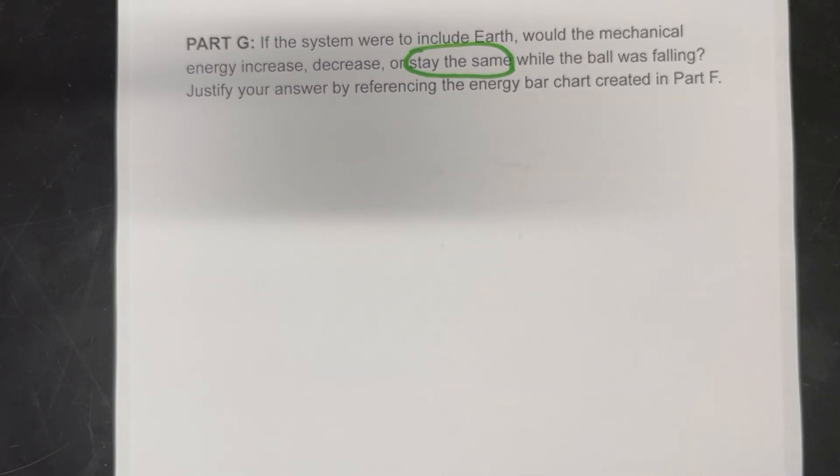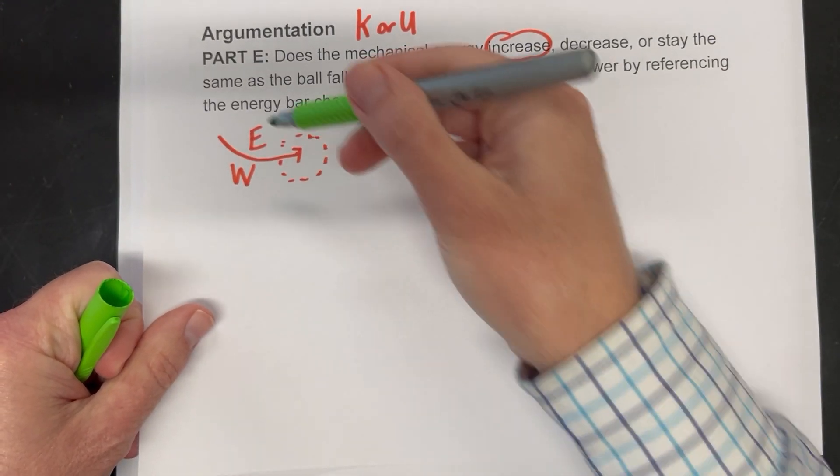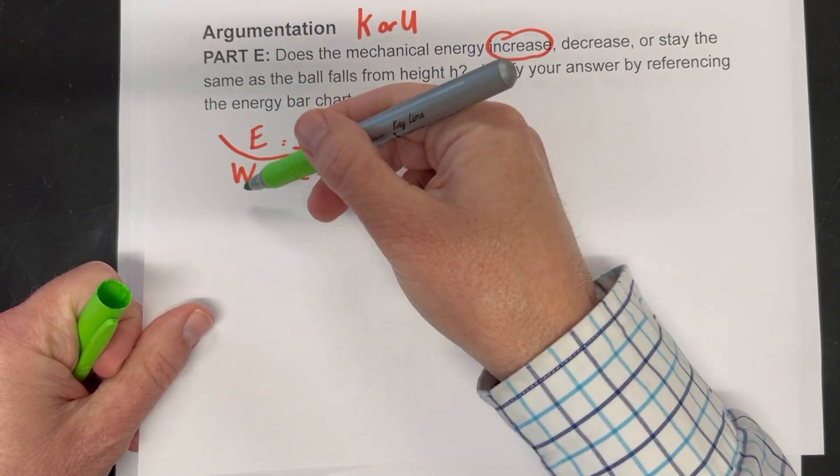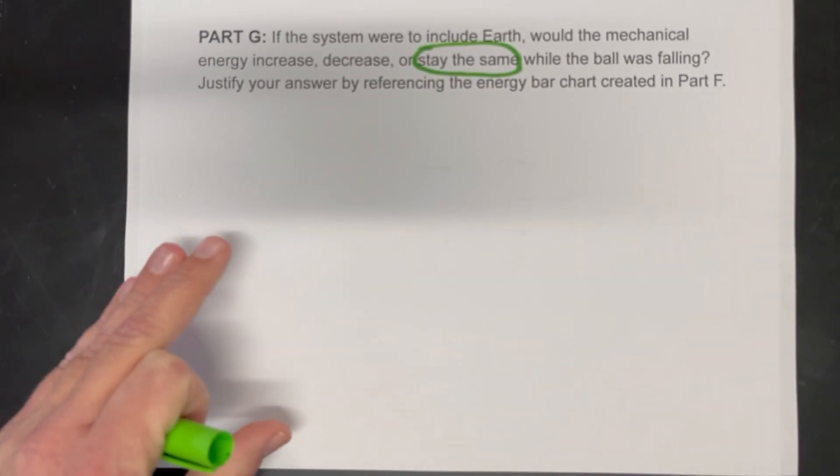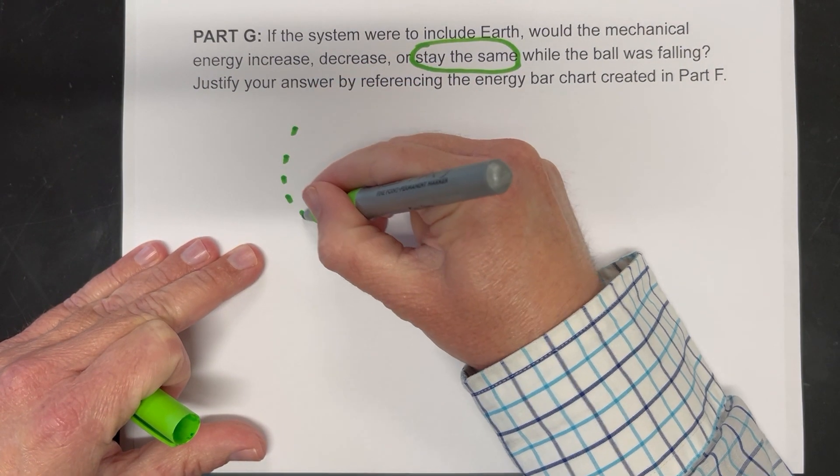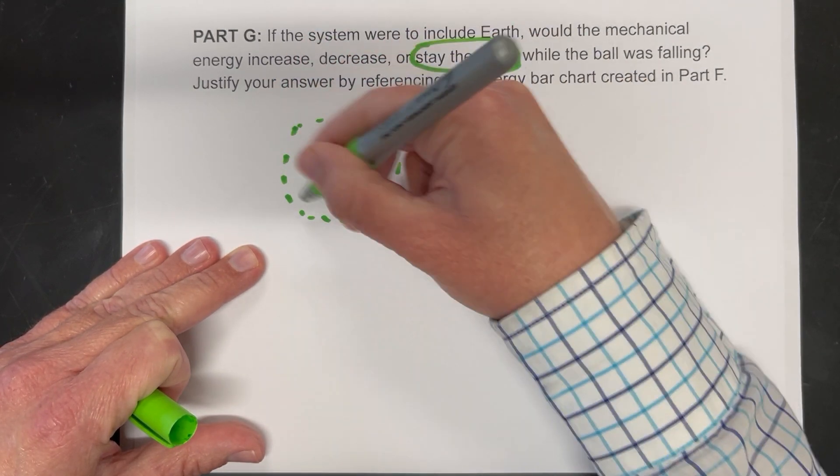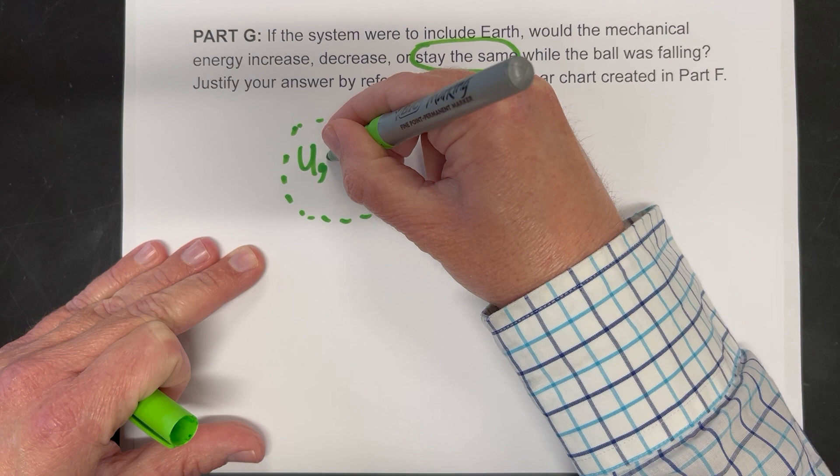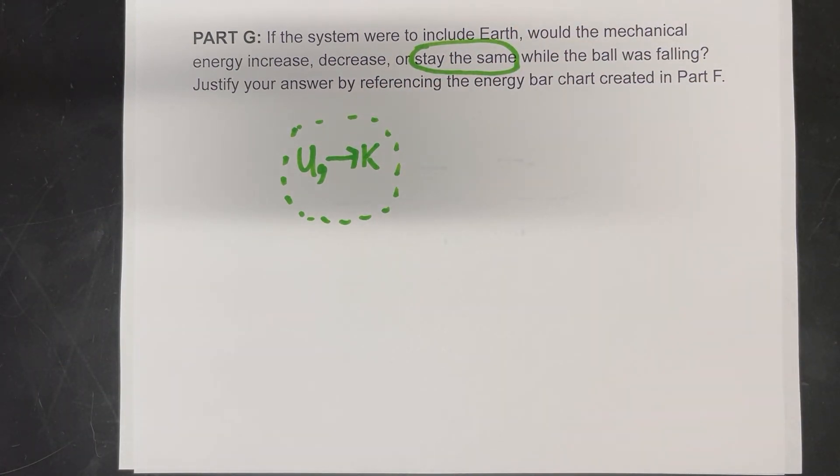We thought about it as the ball was our system. And we brought energy in from the outside because the earth was doing work on it. Gravity was doing work. But now we're going to think of it differently. So our system is the earth and the ball. They're both inside of this system. And gravitational potential energy is simply switching over to become kinetic energy. But we didn't add any new energy into the system.